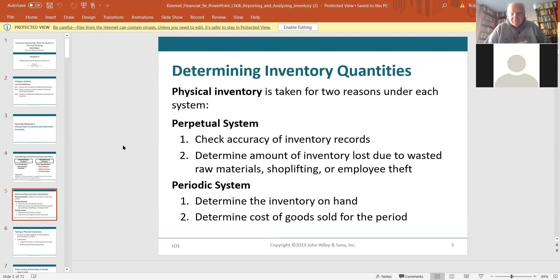We went over these in Chapter 5, apparently. Physical inventory is taken for two reasons under each system. Under a perpetual system, you might take an inventory maybe just once a year, just to double check that things are going okay. Under a periodic system, you have to take a physical inventory every month in order to come up with financial statements.